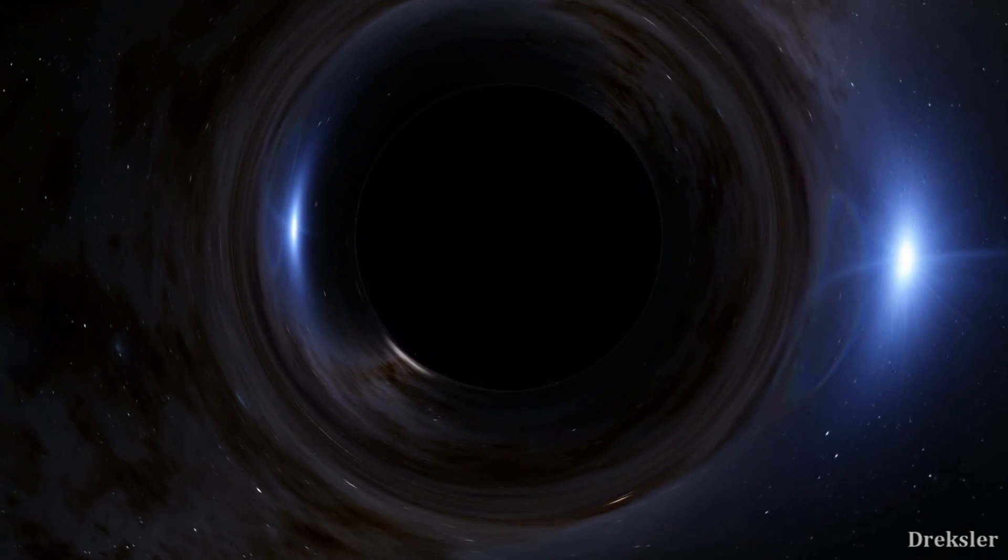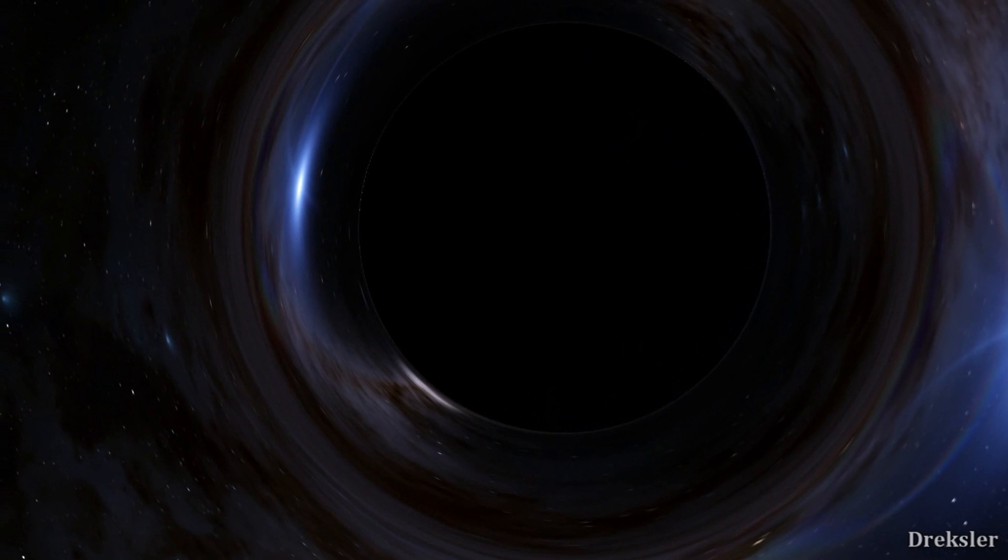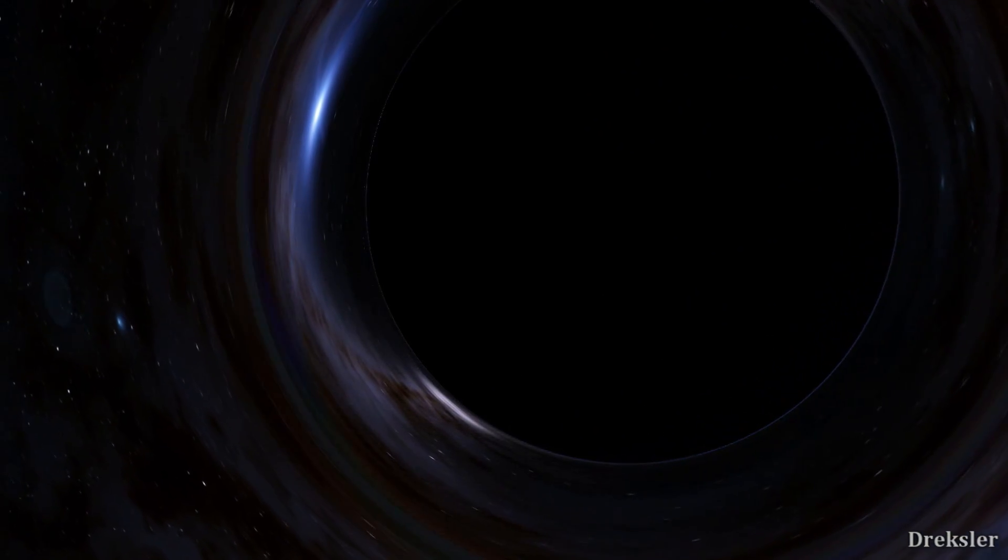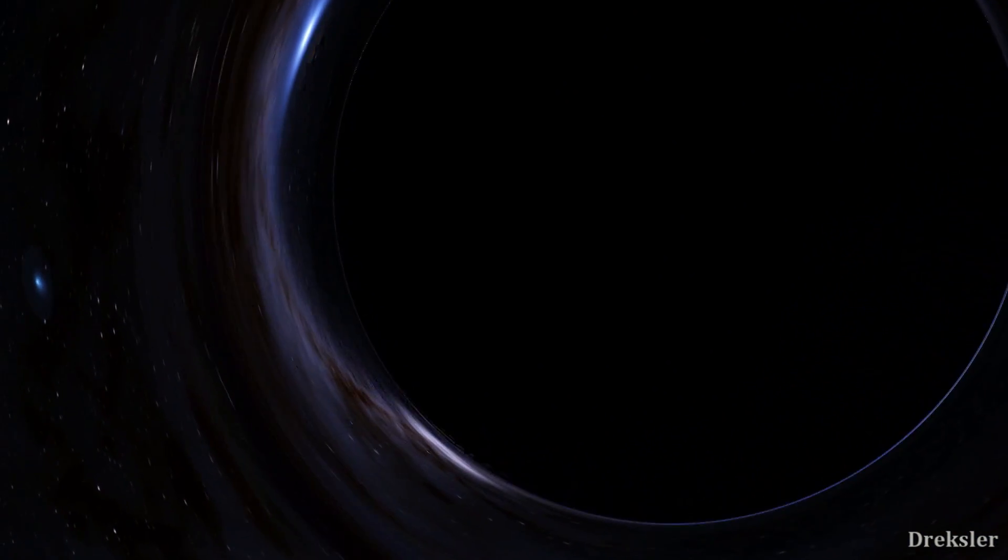At one point the ship would go down to the photon sphere. This is the place around the black hole where photons, light, orbits around the black hole. Things would get pretty distorted and weird here.